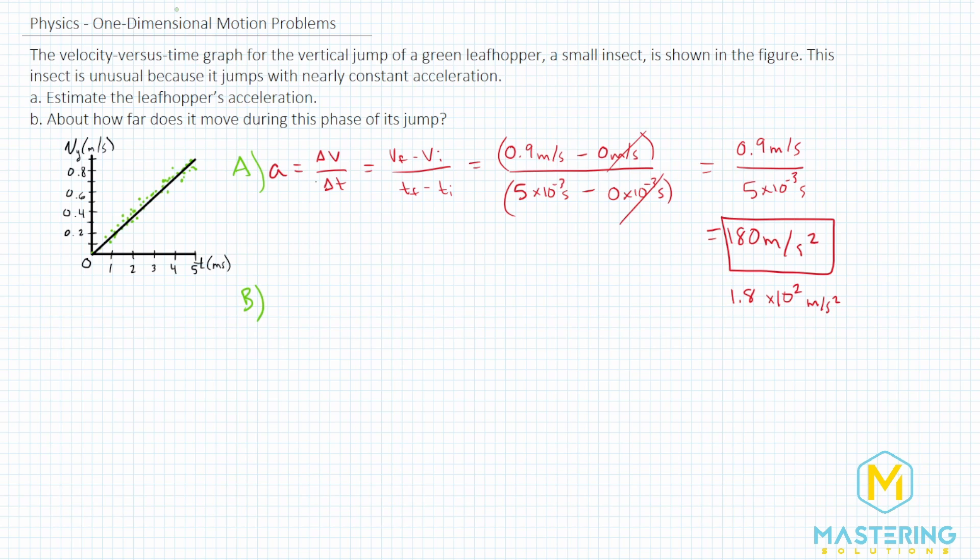And for part B, they say, how far did it move during that phase of the jump? And so we're looking at the exact same numbers, but now we have to use a kinematic equation to do that. So we'll be using y final is equal to y initial plus v initial times time plus one half the acceleration times time squared.